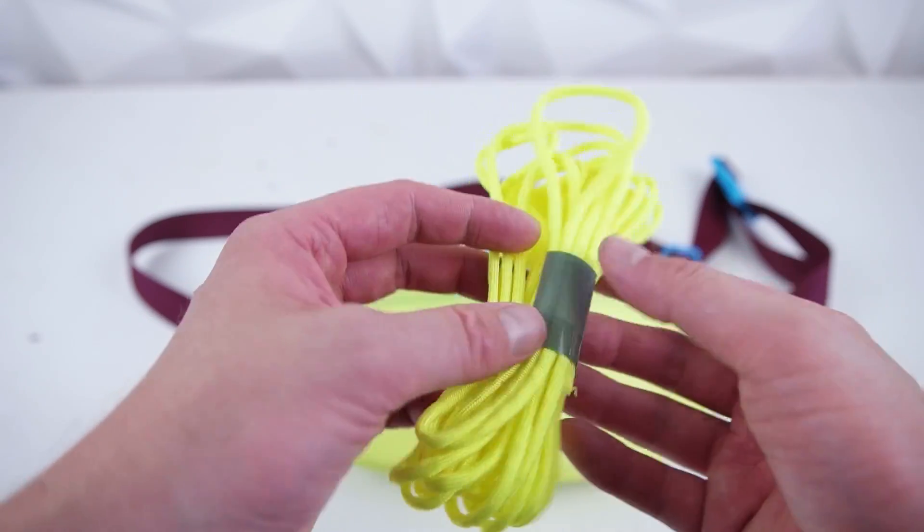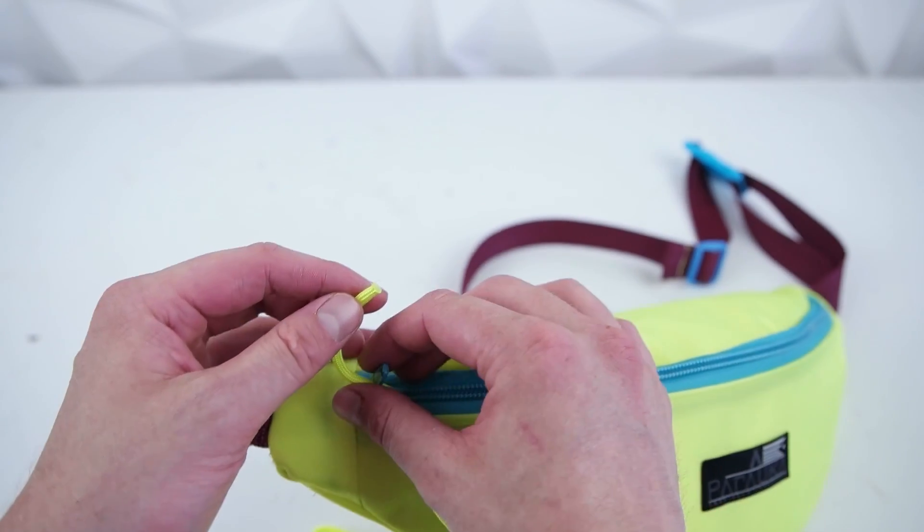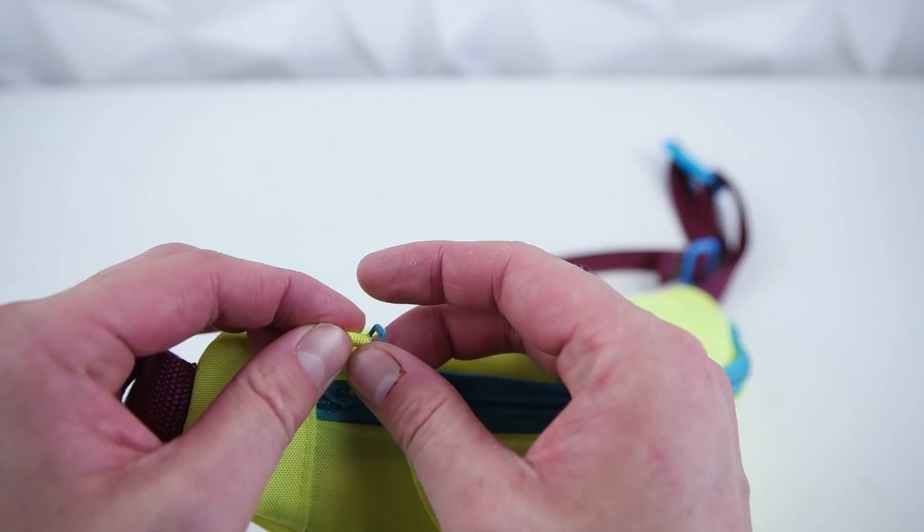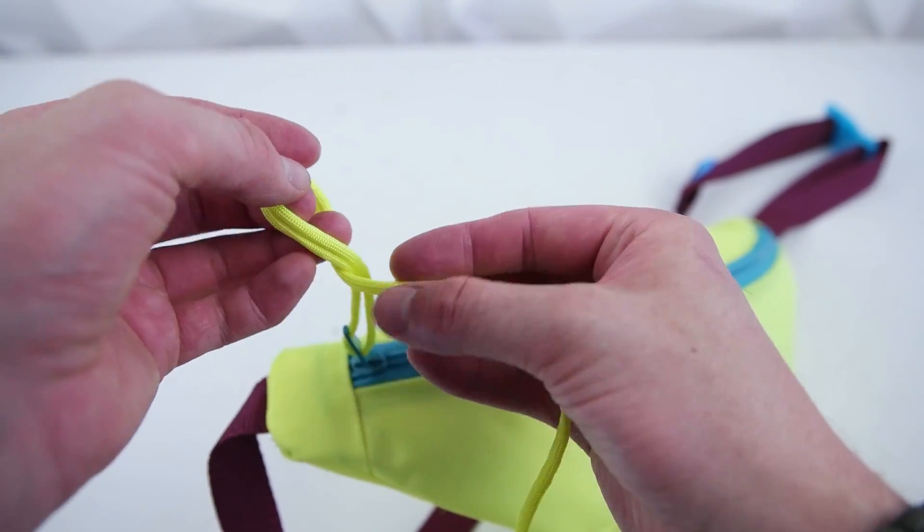Lastly, we're going to add a zipper pull, and there's so many different ways of doing this. We're going to start at the base, feed it down through, and then back up through the top of the zipper hole. Simply make a knot at the top, trim the ends, and you're good to go.